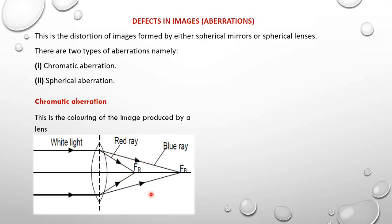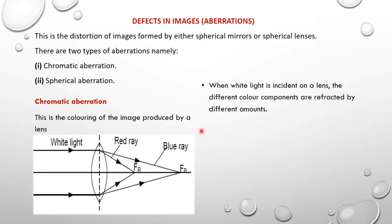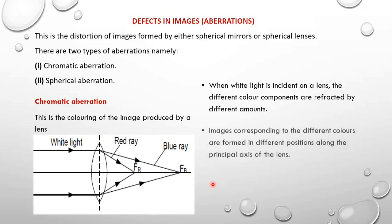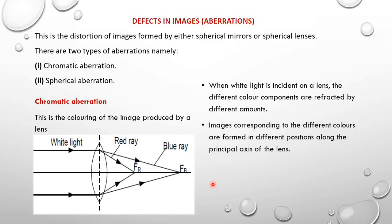So the different color components will be focusing at different foci, and therefore the images corresponding to the different colors are formed at different positions along the principal axis of the lens. We shall have different images formed by the different colors, so the final image is going to be viewed as having colored edges.